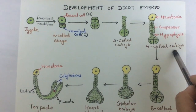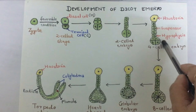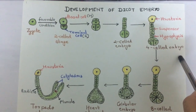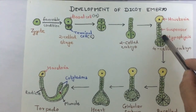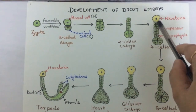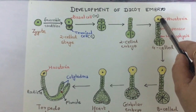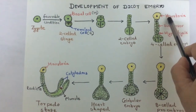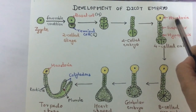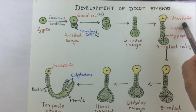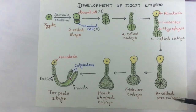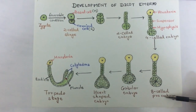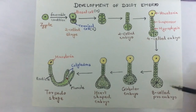There is another division in the terminal cell, forming a four-cell embryo. The uppermost cell of the suspensor has formed a haustoria. This haustoria later provides nutrition for the pro-embryo, which is also called the octant.